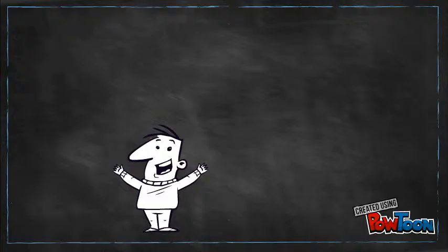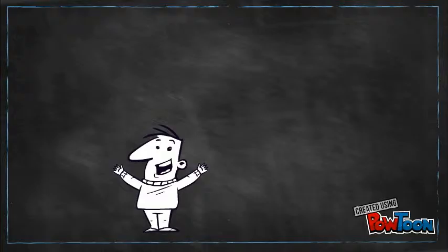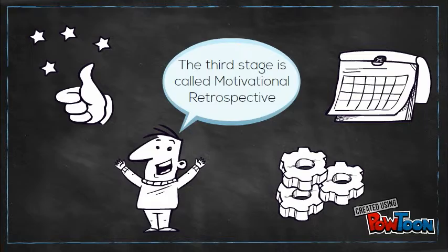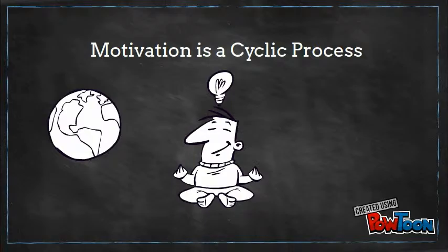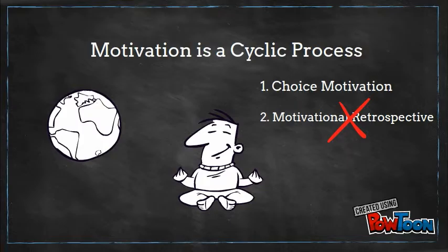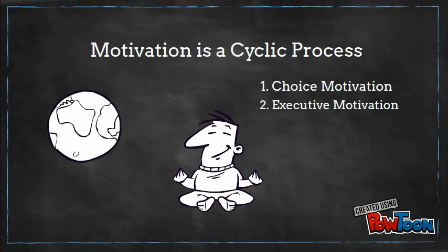Motivation is divided into three stages. Choose motivation: you choose whether to do or not to do something. Exhibitive motivation: you perform actions that can provide good or bad results related to what you choose. Motivational retrospective: you decide based on the previous results to continue or to stop.